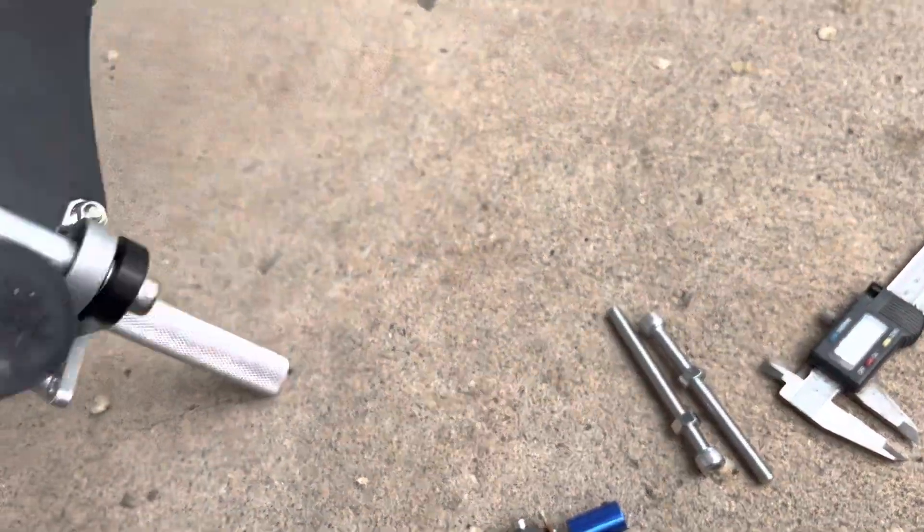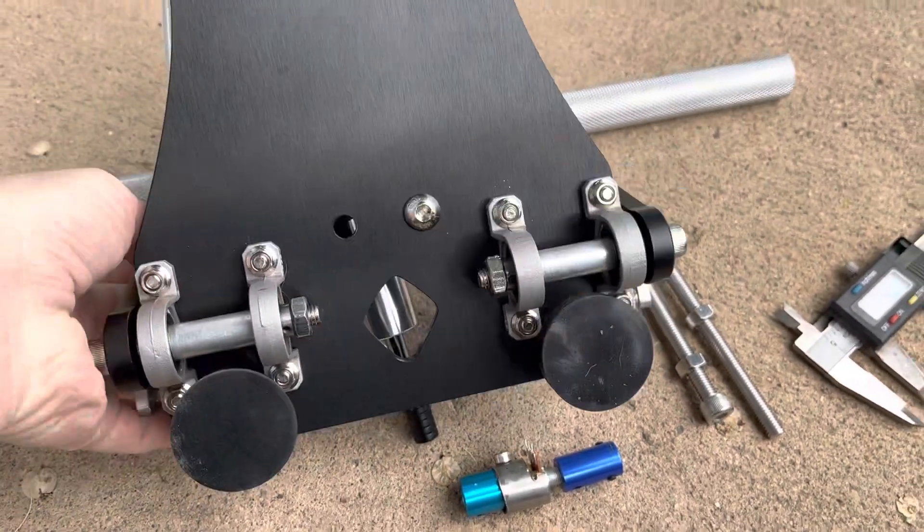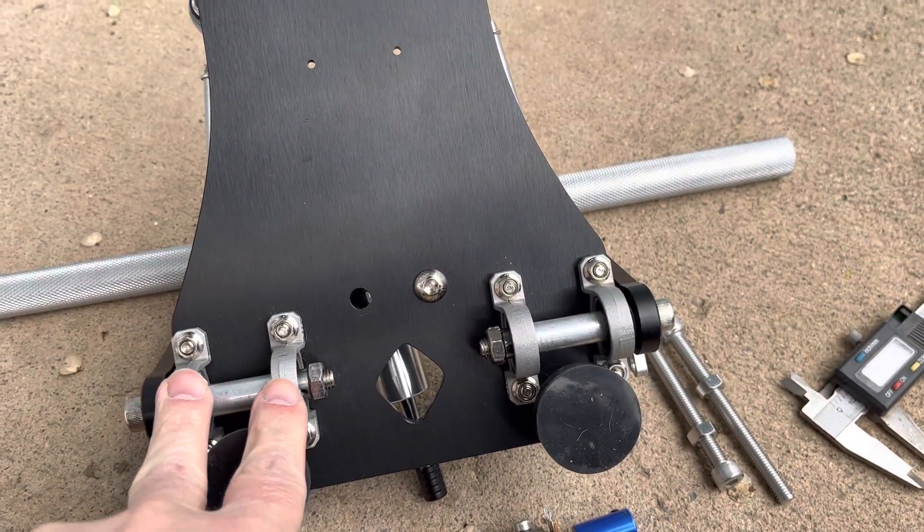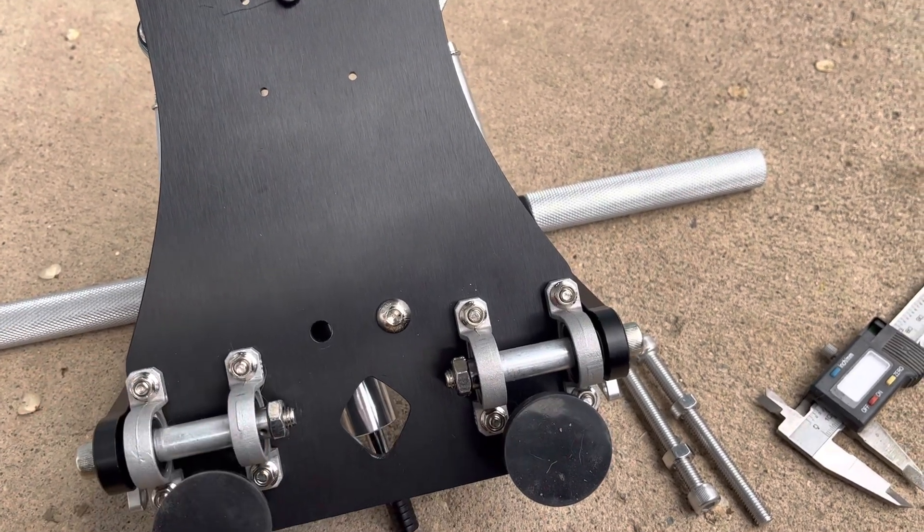All right, what I'm going to do, how I'm going to mount it, is underneath. These are the pillow bearings or pillow block bearings that are holding the rudder pedals on.